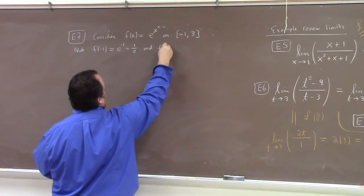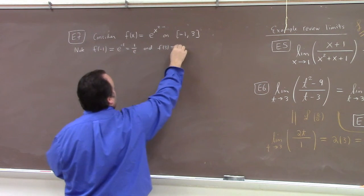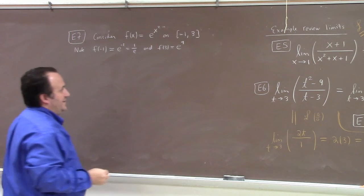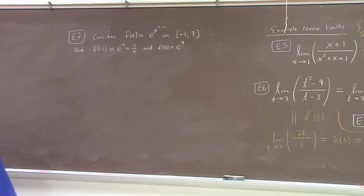And f of 3 is e to the 9, which is pretty huge. I mean, odds are very high that that is going to be the winner in terms of being the maximum.